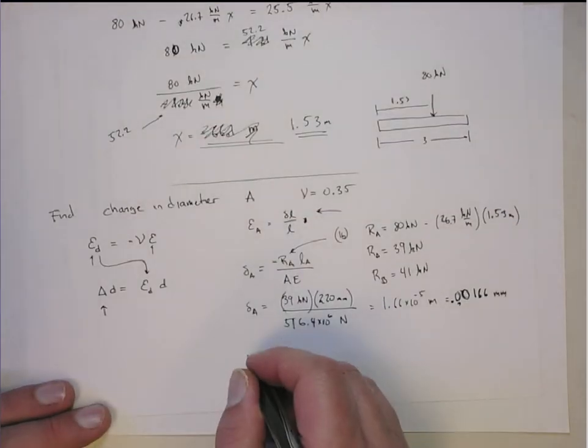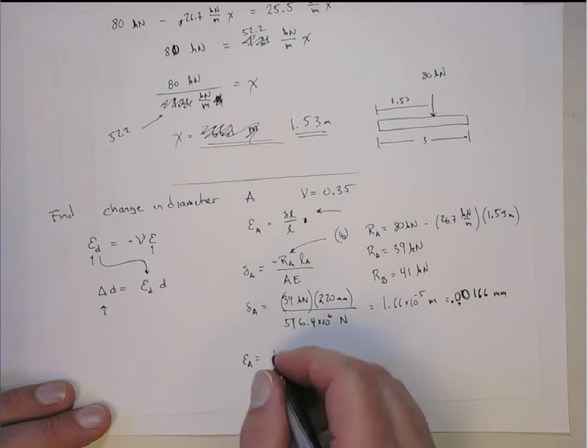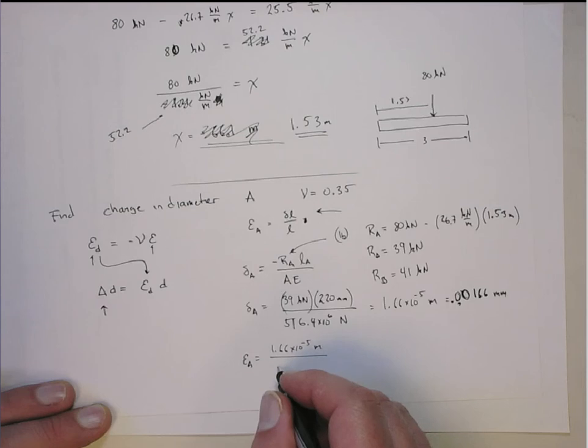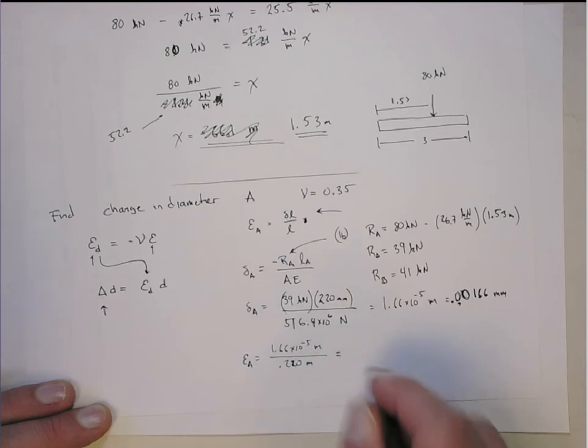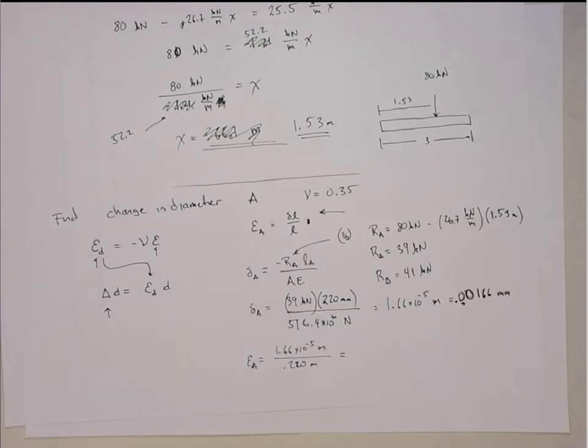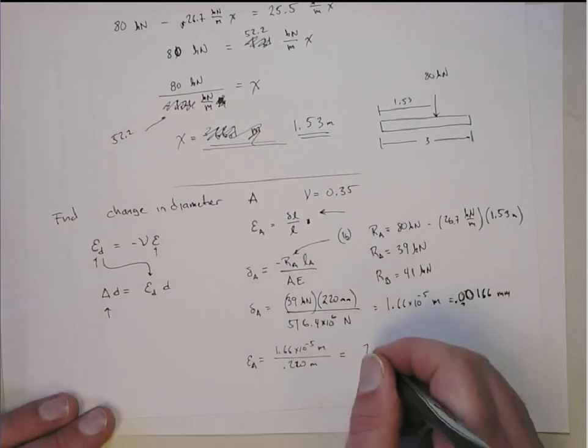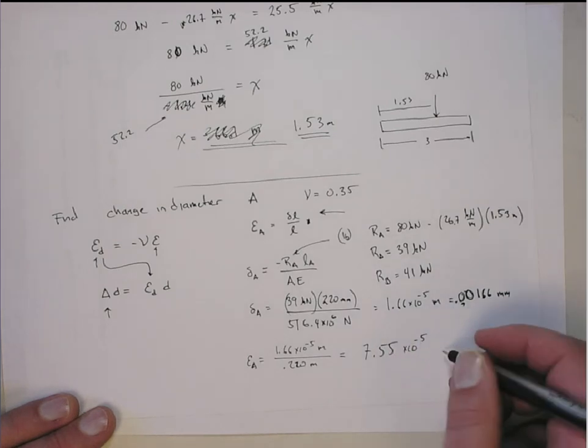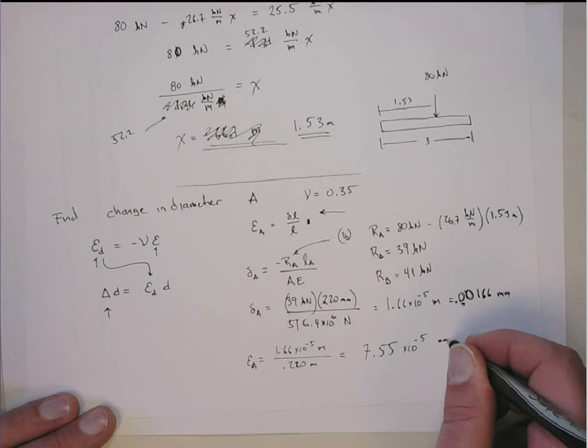Now we know the elongation, that means I can get the strain in A. That's going to be 1.66 times 10 to the minus 5 meters over the original length, which is 0.220 meters. Actually, I could have gotten it more directly just from the force over the area times Young's modulus. That gives me 7.55 times 10 to the minus 5th strain units, millimeters per millimeter.